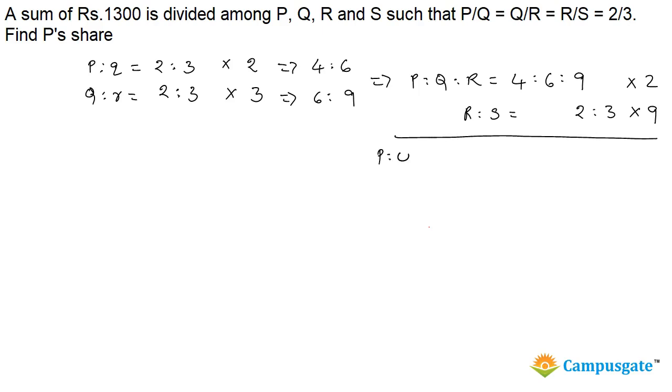Therefore we get P:Q:R:S = 2×4:2×6:2×9:9×3, which equals 8:12:18:27.